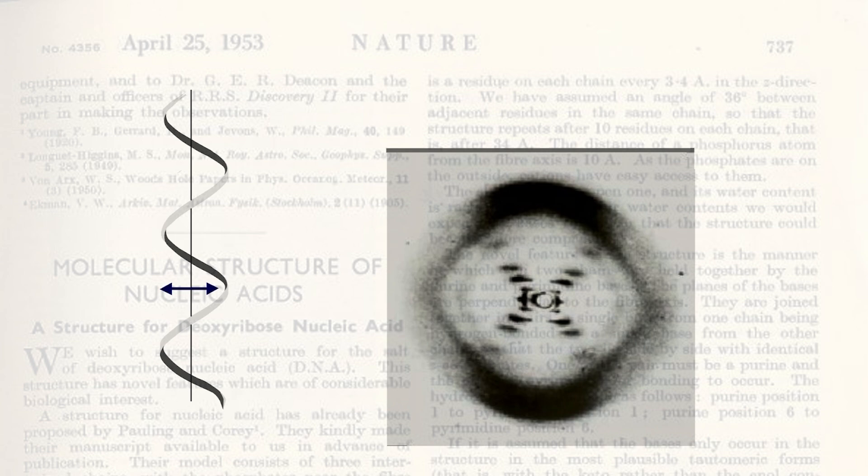In X-ray diffraction patterns, the closer the spots, the larger the actual distance. So the horizontal bar actually corresponds to helical turns. The vertical distance between the bars, which is 34 angstroms, is the measure of the height of one helical turn.